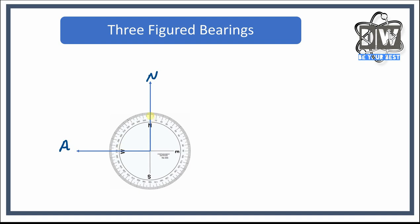Our three-figured bearing: we'd start at zero and we're going to go all the way around here, past 100, past 120, and so forth, and we get all the way to 270. So our answer for this would be 270 degrees. The bearing from north to A is 270 degrees, and that's really important.